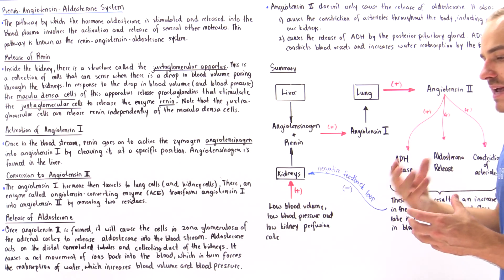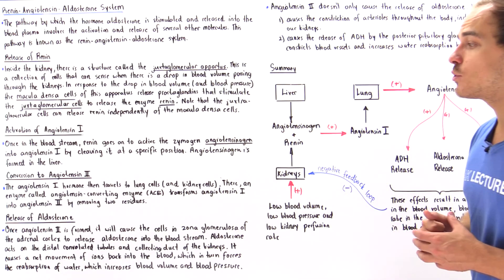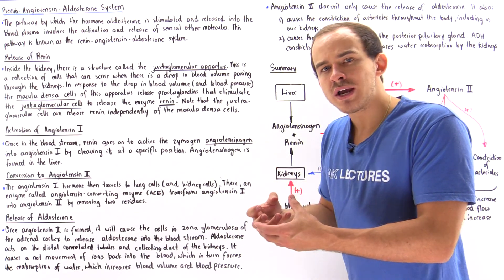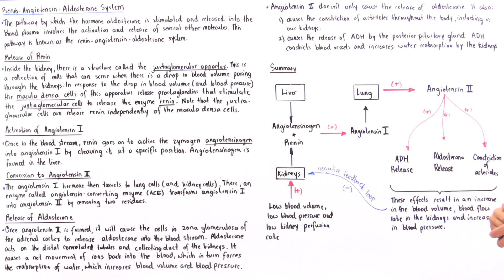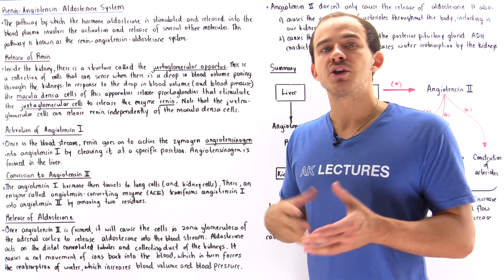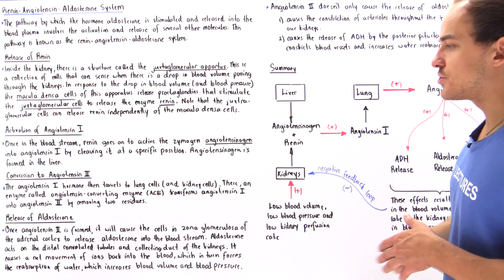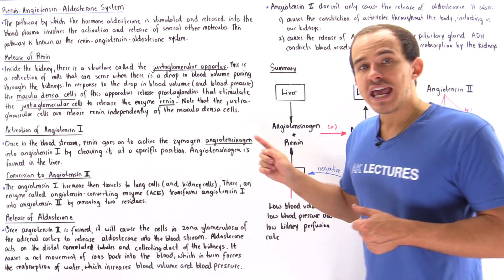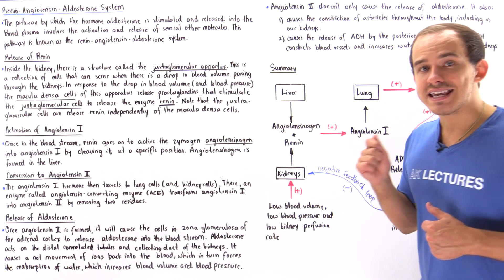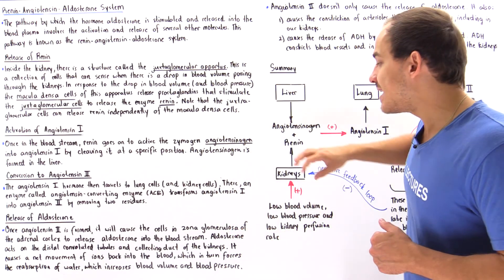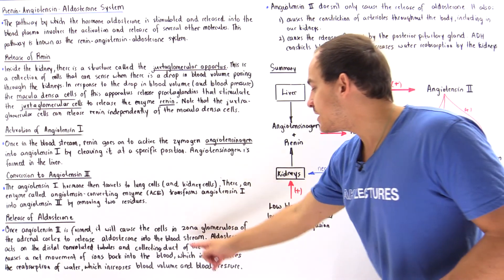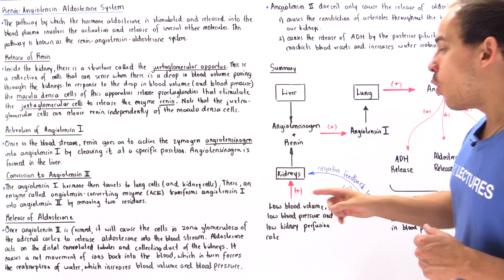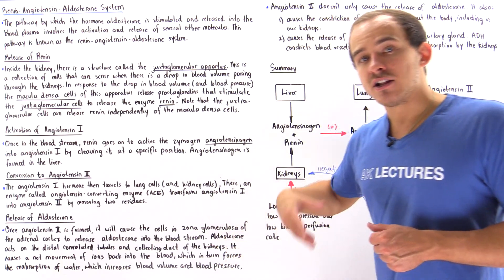Angiotensin II is one of the final products of this pathway. It can directly stimulate our blood vessels to constrict and also stimulates increases in blood volume and blood pressure. Specifically, angiotensin II travels to special cells in the adrenal cortex known as the zona glomerulosa, which releases the hormone aldosterone.